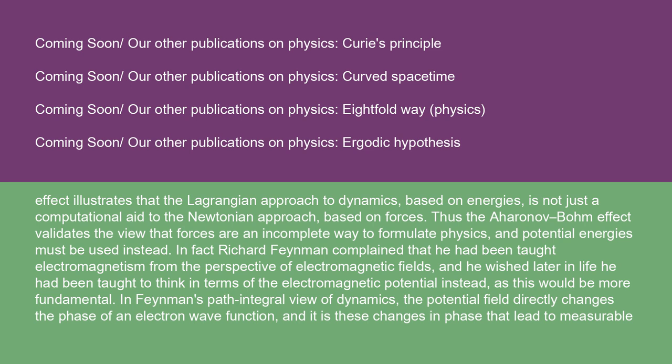In fact, Richard Feynman complained that he had been taught electromagnetism from the perspective of electromagnetic fields, and he wished later in life he had been taught to think in terms of the electromagnetic potential instead, as this would be more fundamental. In Feynman's path integral view of dynamics, the potential field directly changes the phase of an electron wave function, and it is these changes in phase that lead to measurable quantities.